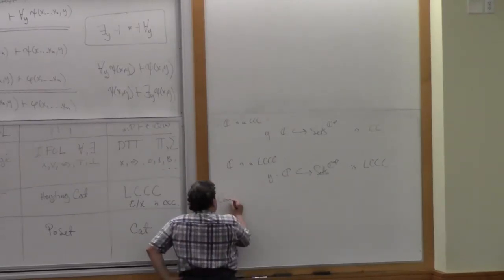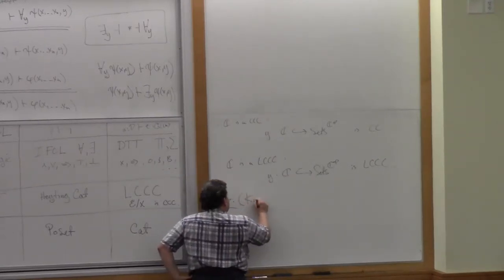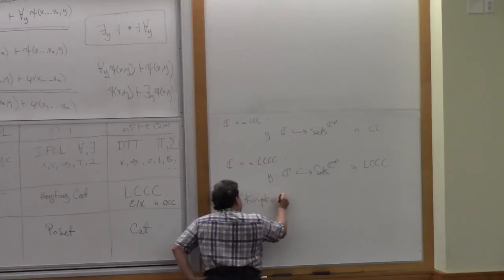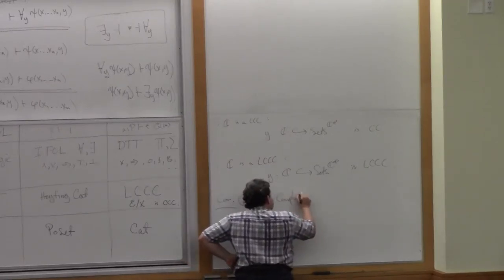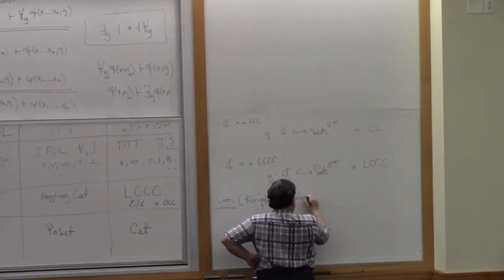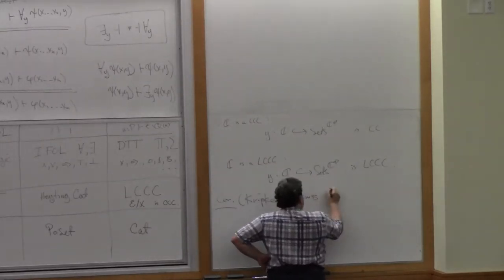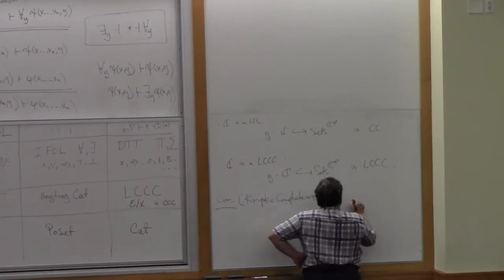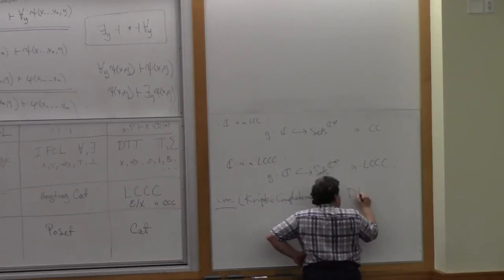And as a corollary, we have the same kind of Kripke-completeness theorem with respect to just things with a poset in the exponent completeness for dependent type theory, right?